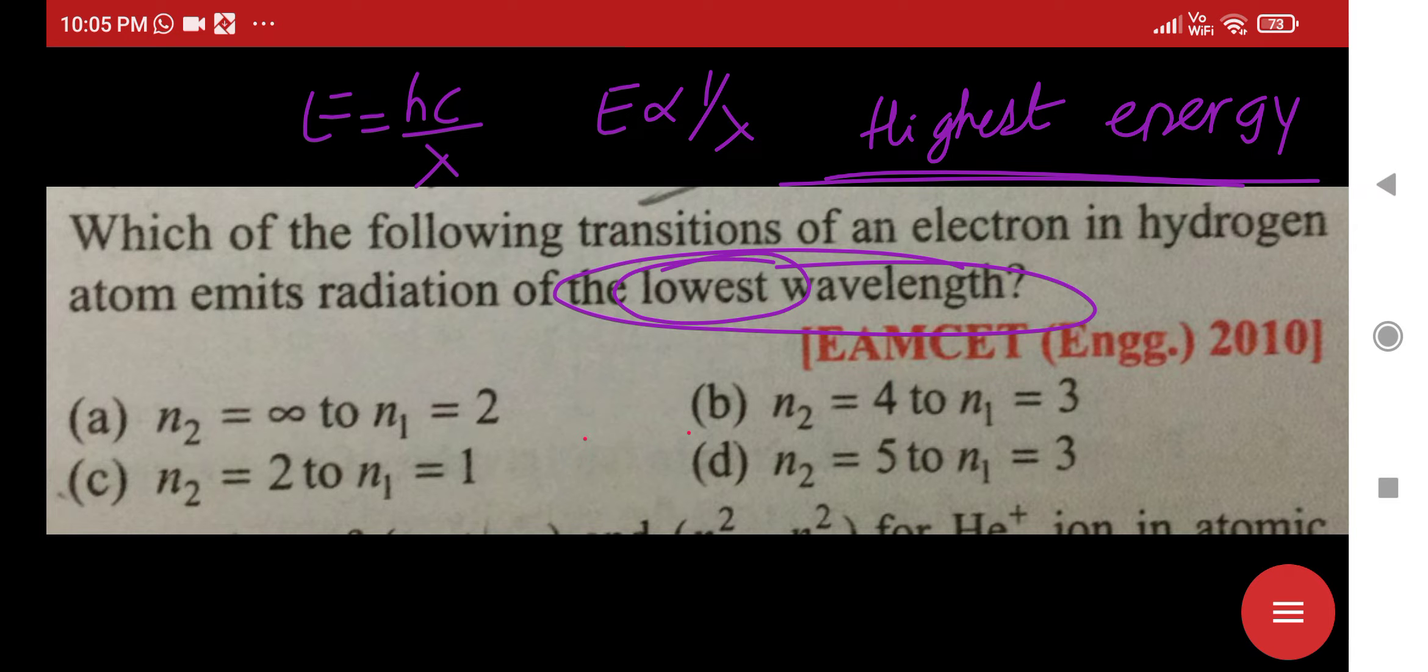Highest energy is possible between infinity to 2, one choice. 4 to 3, another choice. 2 to 1, one more choice. 5 to 3, one last option is given.